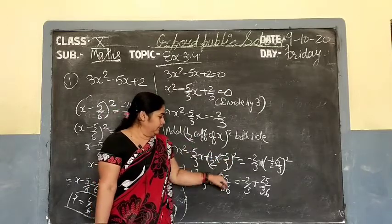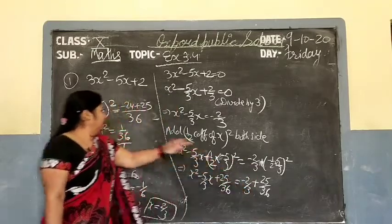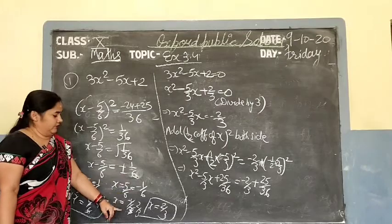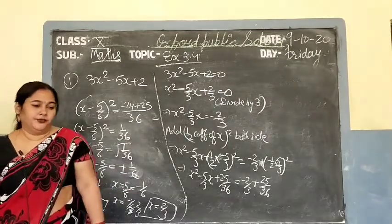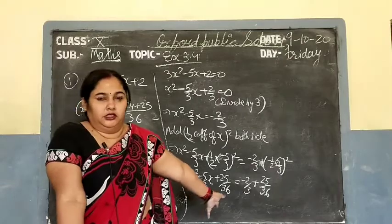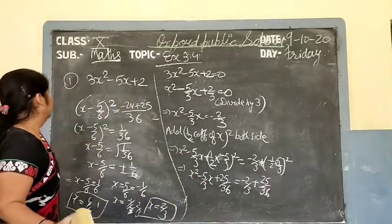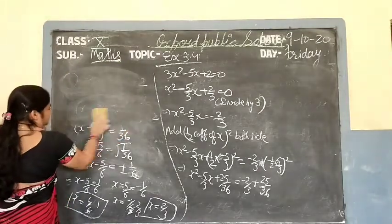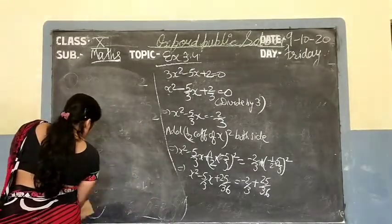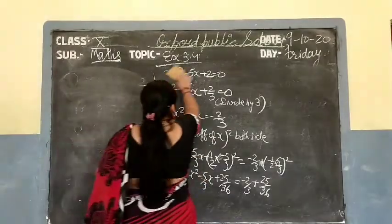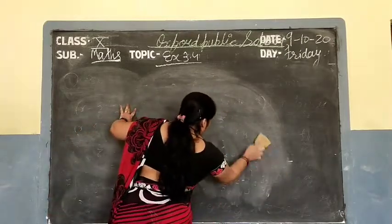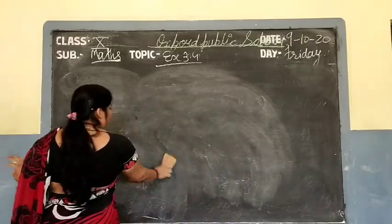Then on the left side, 5 squared is 25 and 6 squared is 36. Take LCM, giving 25 upon 36. The square on the left goes away with the square root. Square root of 36 is 6. Then solve once with plus and once with minus to get the two roots. This is the perfect square method for all 7 questions in this set.